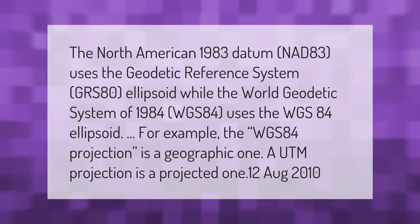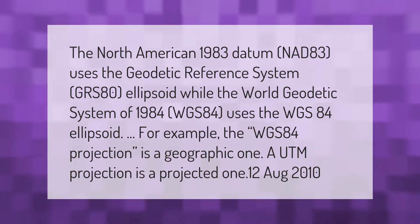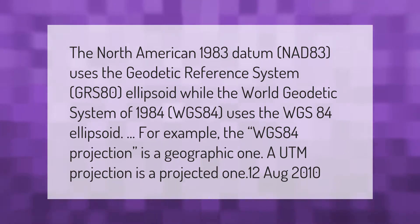For example, the WGS-84 projection is a geographic one, while a UTM projection is a projected coordinate system.